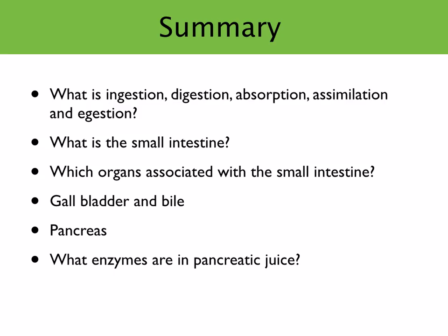In summary, to recap on what we've learned in this lesson: we looked at ingestion, digestion, absorption, assimilation and egestion. Ingestion is the taking in of food at the mouth. Digestion is when large molecules are broken down into small, simple ones. Absorption is when the small molecules are taken into the blood. Assimilation is when the molecules are taken into the cells. Egestion is the removal of waste materials. The small intestine is made up of two parts: the duodenum, which is the first part, and the ileum, which is the second part. The organs associated with the small intestine are the liver, gallbladder and pancreas.